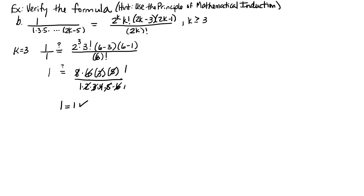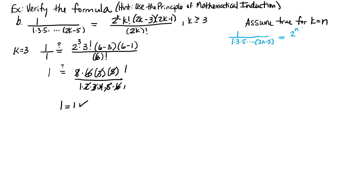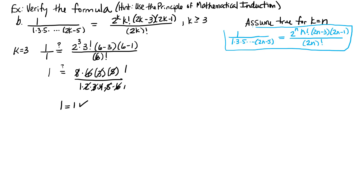Now we use induction. We assume the statement is true for k=n: that 1 over (1 times 3 times 5 times ... times (2n-5)) equals 2ⁿ times n! times (2n-3) times (2n-1) over (2n) factorial. What we want to show is that it must then be true for k=n+1: that 1 over (1 times 3 times 5 times ... times (2(n+1)-5)) equals 2^(n+1) times (n+1)! times (2(n+1)-3) times (2(n+1)-1) over (2(n+1)) factorial.